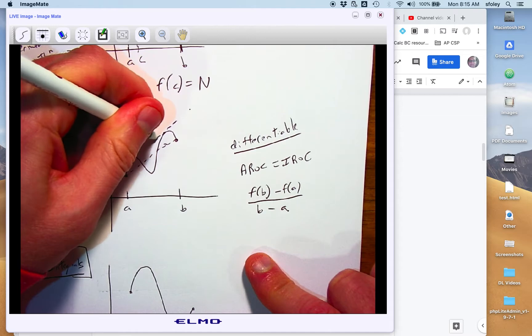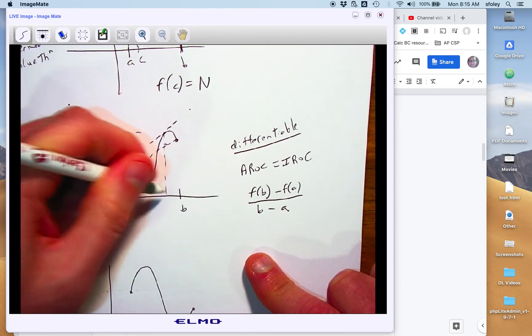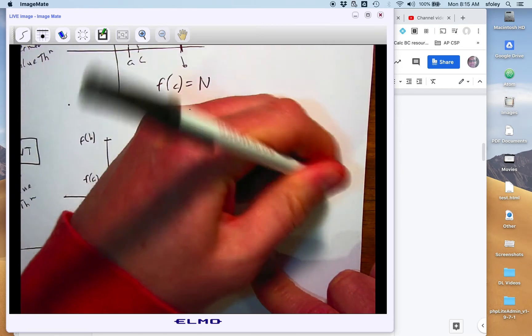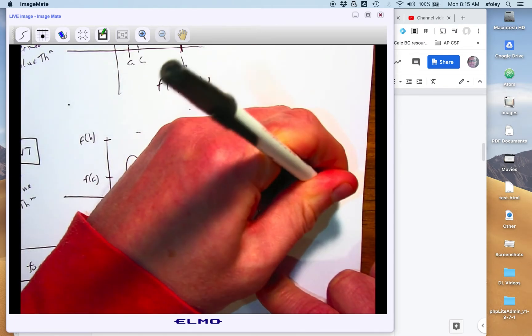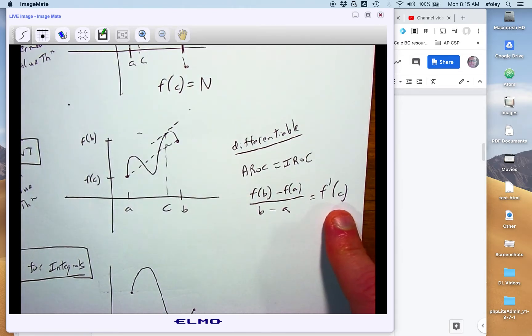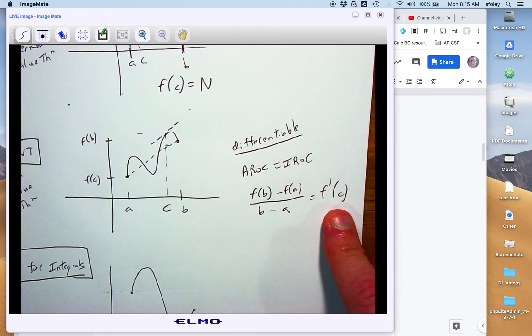But at least one place where the IROC, also known as the slope of the tangent line, is the same as the AROC. And so there's this c-value again, but this time it's where the derivative of the function at that point equals that AROC. So the AROC, average rate of change, equals the IROC. So that's the Mean Value Theorem.